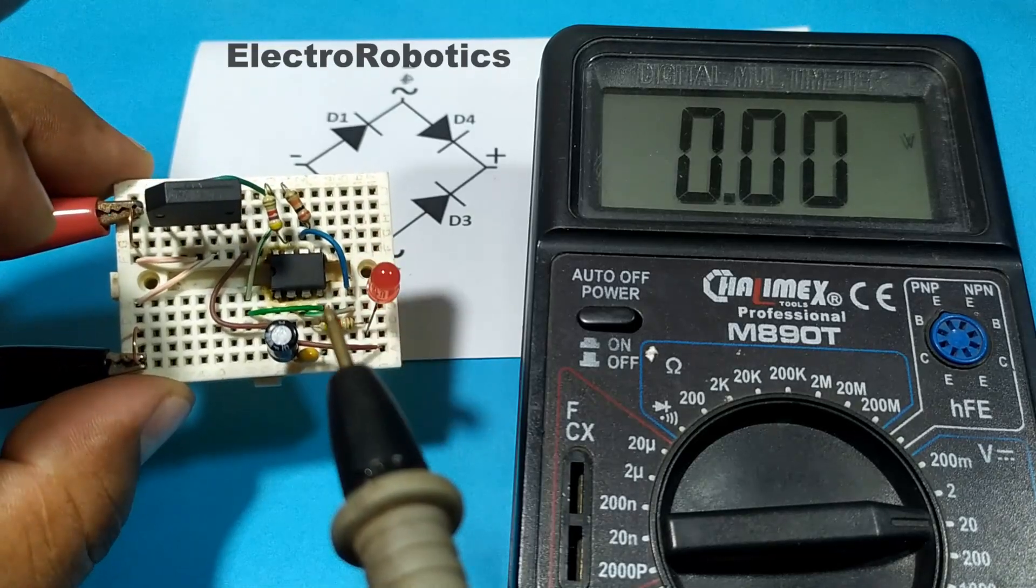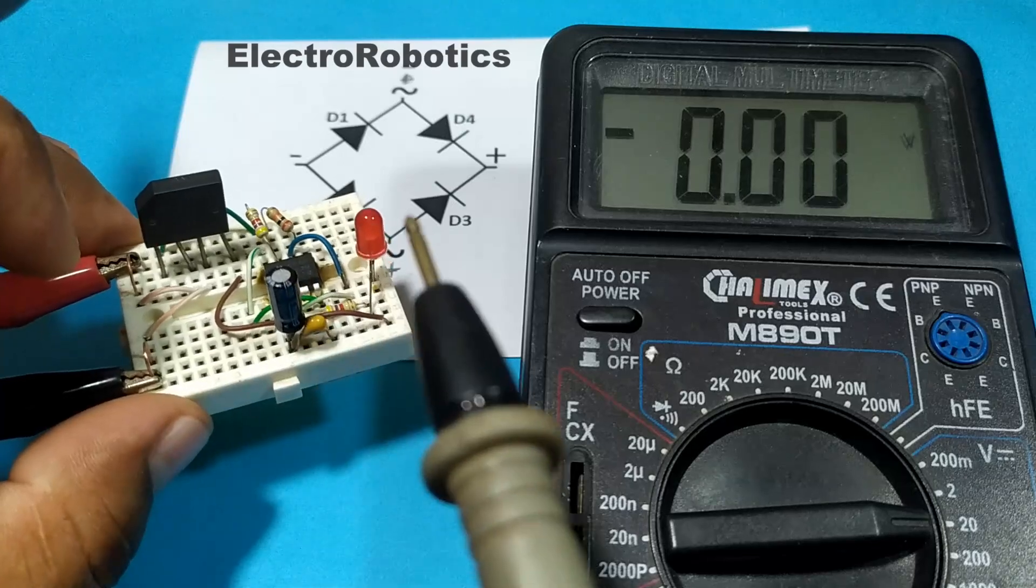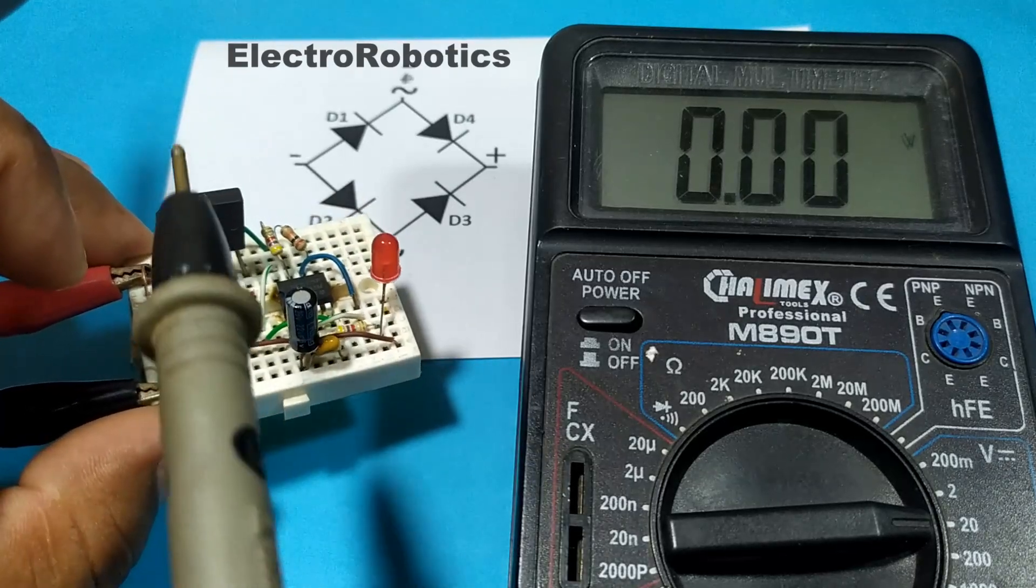Therefore, there will be no problem if the circuit has a loss of 1.3 volts since this diode bridge is a good protection circuit.